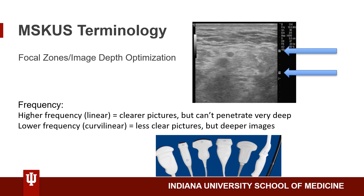For most musculoskeletal ultrasound, we use high frequency or linear ultrasound probes. They have clearer pictures and better resolution, but don't penetrate very deeply. Occasionally with a shoulder that has a lot of muscle or adipose tissue, I'll need a curvilinear probe — the kind we use for the abdomen — to look deeper than four or five centimeters. Once you start getting about five or six centimeters deep, a curvilinear probe gives a better picture. I often use the curvilinear probe in the posterior shoulder to get a wider view of the entire shoulder joint.